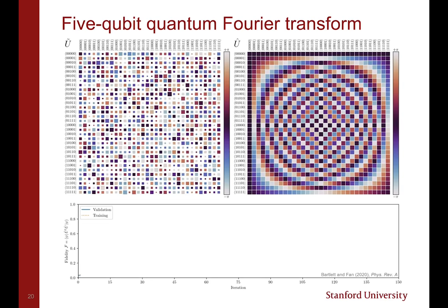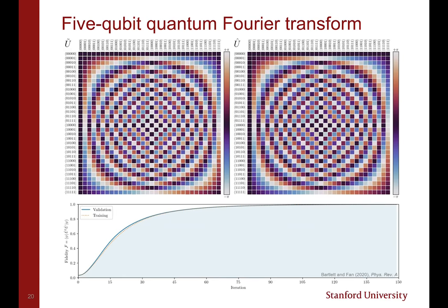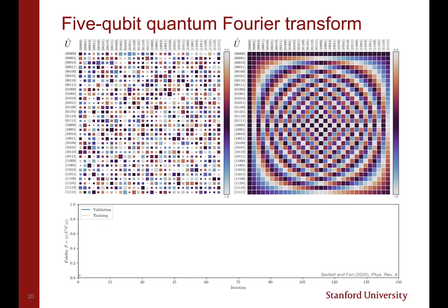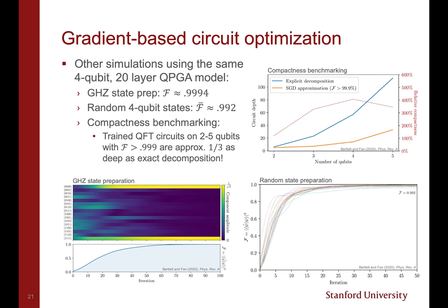As a more animated example, here is the evolution of a 5 qubit QPGA being trained to implement a 5 qubit QFT. As in the previous slide, the operator starts off randomly initialized, but quickly converges to a high fidelity approximation of a quantum Fourier transform.